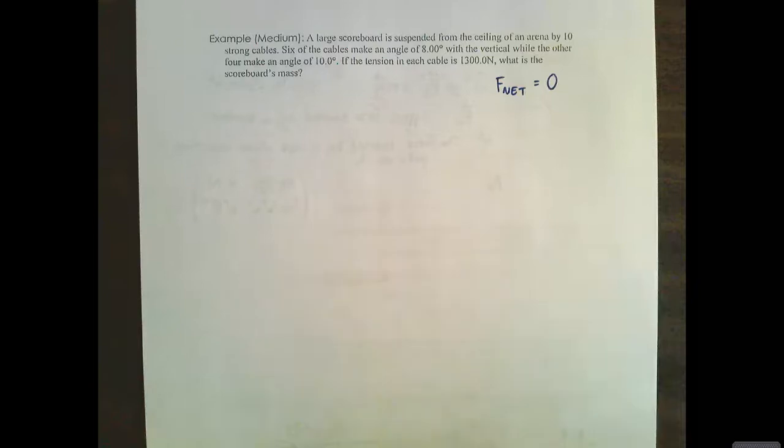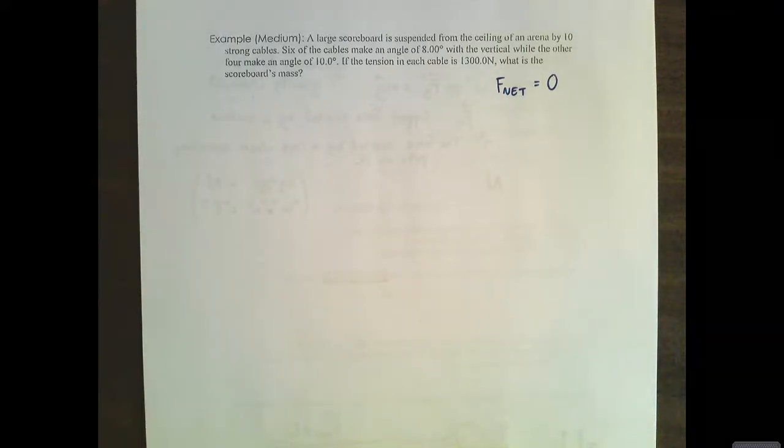This is our medium difficulty example. A large scoreboard is suspended from the ceiling of an arena by 10 strong cables. Six of the cables make an angle of eight degrees with the vertical, while the other four make an angle of 10 degrees with the vertical. If the tension in each cable is 1300 newtons, what is the scoreboard's mass?